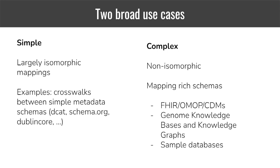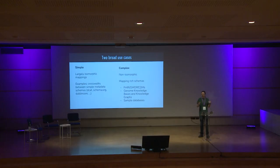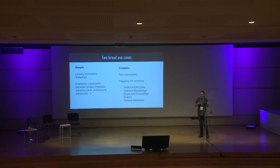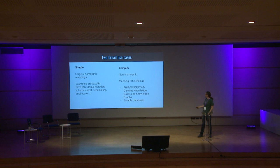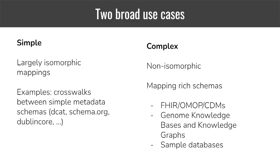We can think of schema mapping in terms of broad use cases. We have simple isomorphic mappings where it's very tempting and quite valid to use SESM — many metadata schema crosswalks between DCAT, schema.org, and Dublin Core are just isomorphic term equivalences. But there's a lot more in the complex mappings category, including mapping between FHIR and OMOP — the OMOP data model, not just the vocabularies — clinical data models in general, and complex knowledge stored in genome knowledge bases like the Gene Ontology, the Alliance of Genome Resources, and Monarch. It seems like overloading SESM to do that.